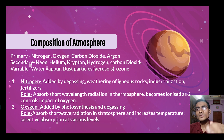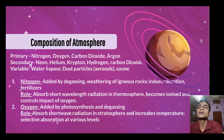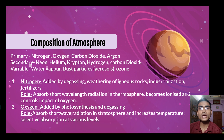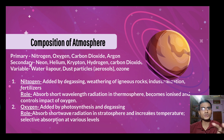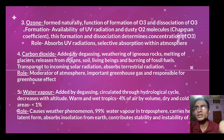Oxygen comes from photosynthesis carried out by plants and also from degasification. The role of oxygen is that it absorbs short-wave radiation in the stratosphere and also increases temperature. Oxygen performs selective absorption — it does not absorb everything, only selective wavelengths.